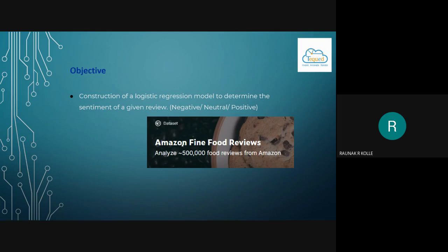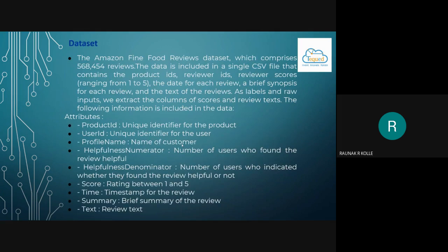The data set used for this is the Amazon fine food reviews data set. The Amazon fine food review data set comprises of 568,454 reviews. The data is included in a single CSV file that contains the product IDs, reviewer IDs, reviewer scores ranging from 1 to 5, the date for each review, a brief synopsis for each review, and the text for each review.